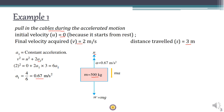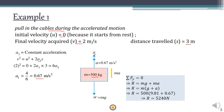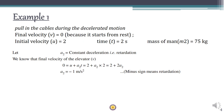Taking the sum of forces in the upward direction equal to zero: R = m·a + m·g. Solving for m, g, and a, we get the reaction R equal to 5240 N. This is slightly more than the weight of the elevator, which makes physical sense during upward acceleration.